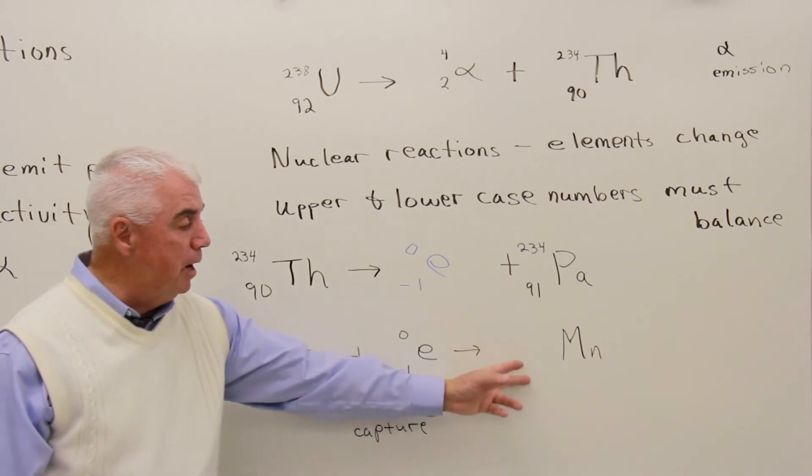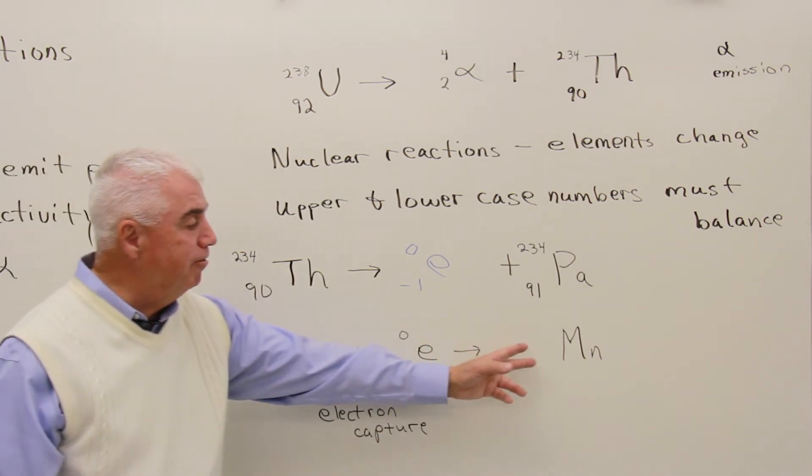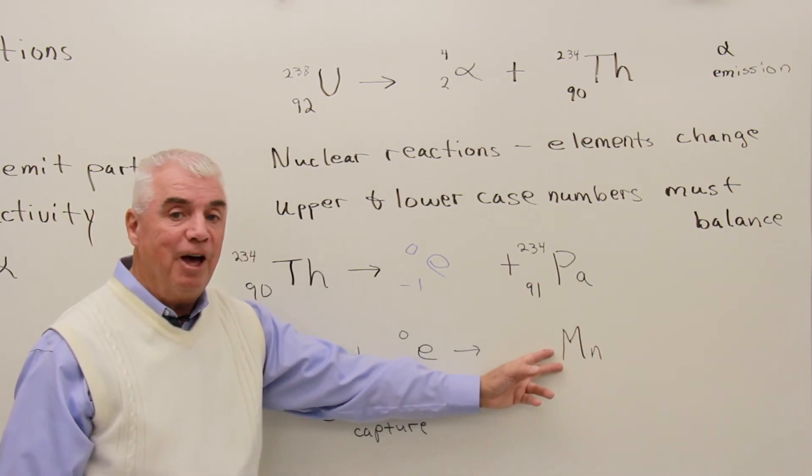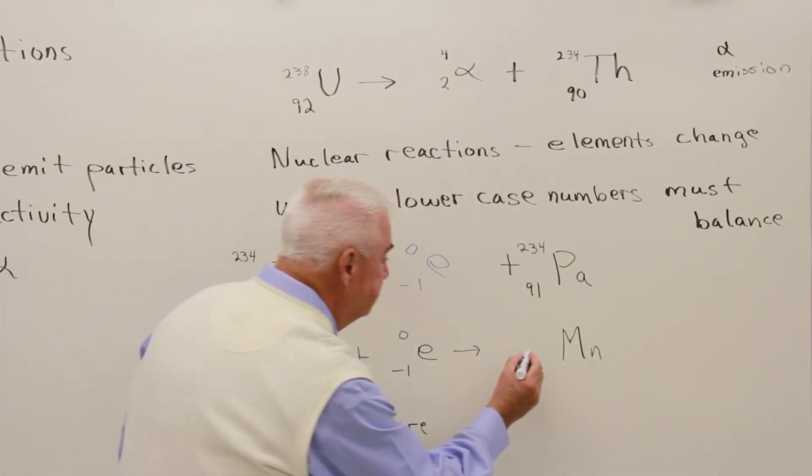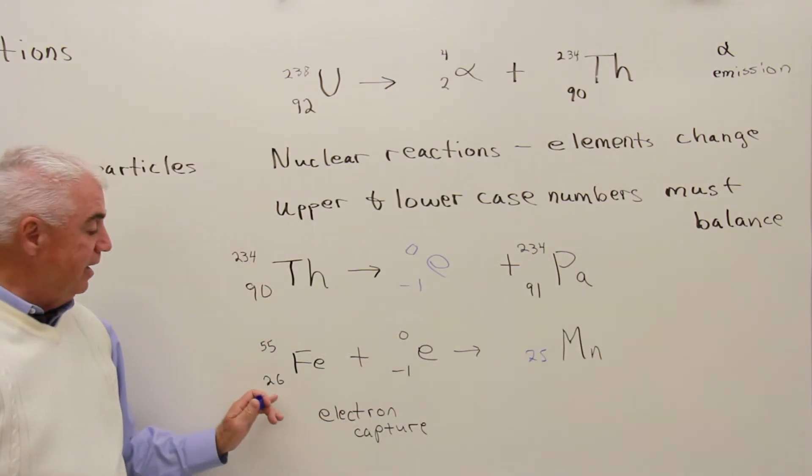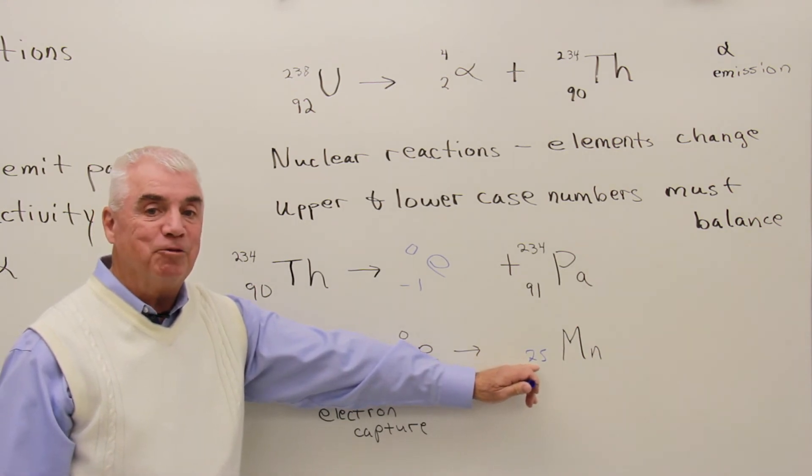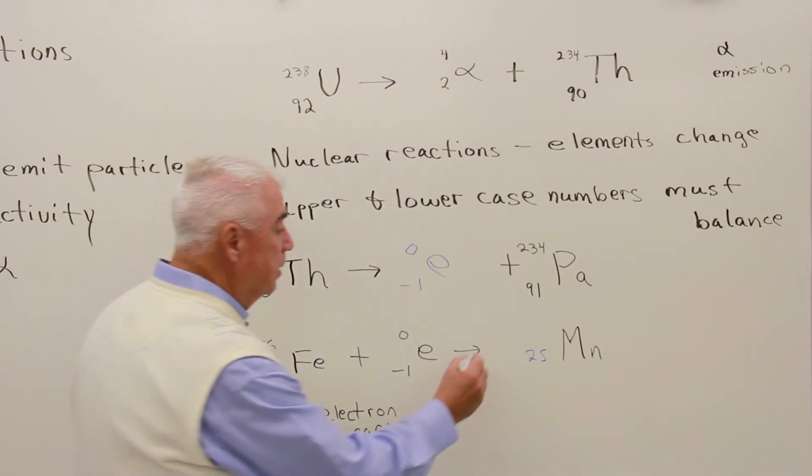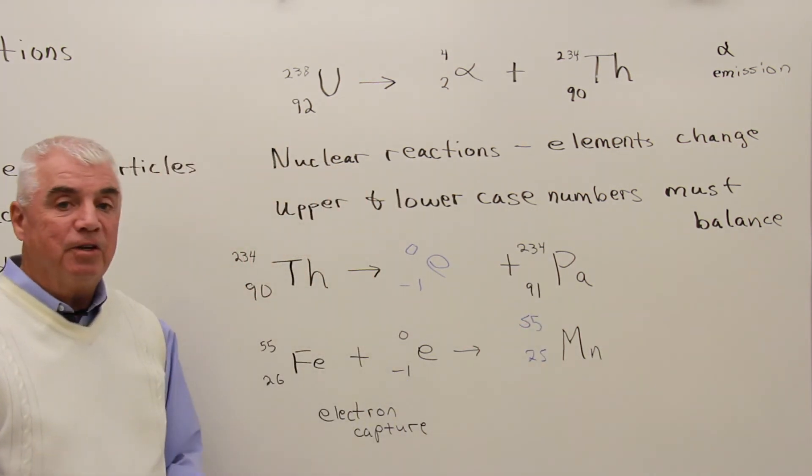Let's see if we can come up with the characteristics of this isotope. Well, we could find manganese on the periodic table of elements and see that it's element 25. Or we could calculate that. 26 and a minus 1. We know that we're going to have to have 25 protons over there. 55 and 0. This is manganese 55.